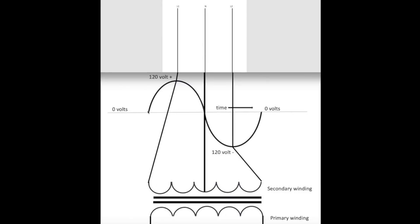Because we're going 120 volts positive, zero, 120 volts negative. So once it hits zero again, it goes down to 120 volts negative, and that's where L2 is.